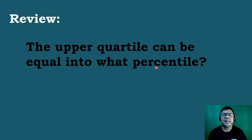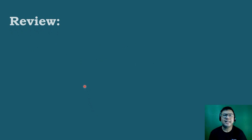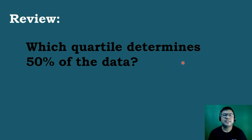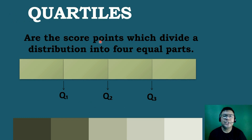The upper quartile can be equal to what percentile? The correct answer is the 75th percentile. Let's have our last question: which quartile determines 50% of the data? The correct answer is the 2nd quartile. To interpret the measures of position, we need to be familiar with the quartiles, deciles, and percentiles.